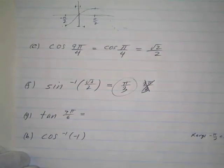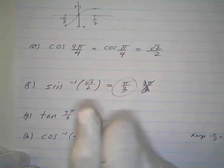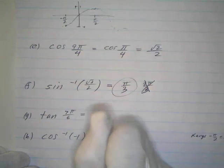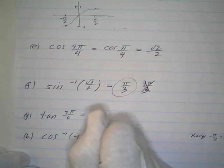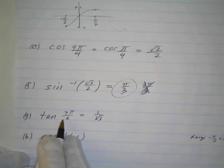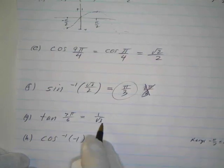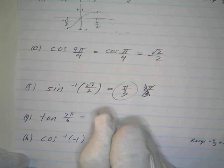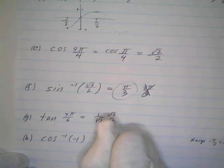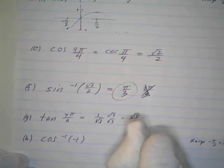Part G: the tangent of 7π/6. The tangent of π/6 is 1/√3. Since 7π/6 is in the third quadrant, and the tangent is positive in the first and third quadrants, the tangent of 7π/6 is also 1/√3. We rationalize by multiplying top and bottom by √3 to get √3/3.